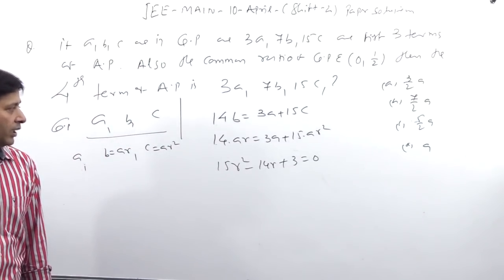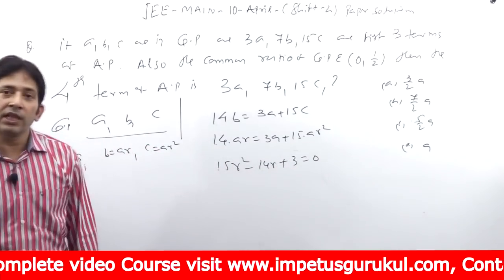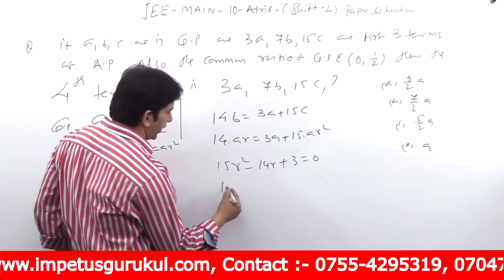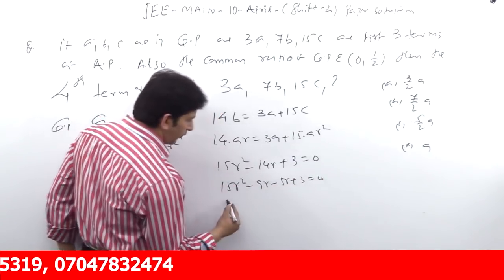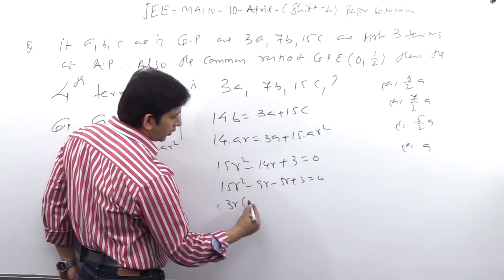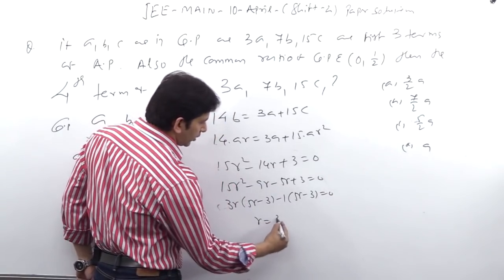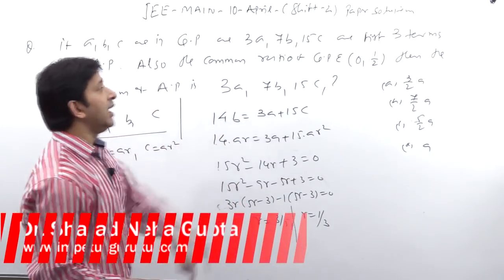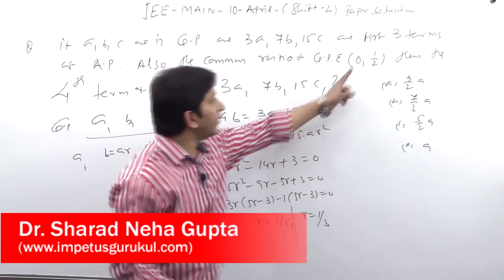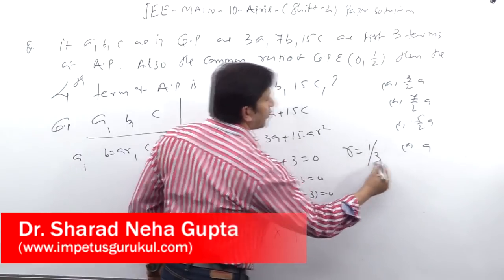Now factoring 15R² - 14R + 3 = 0: we get 15R² - 9R - 5R + 3 = 0, so 3R(5R - 3) - 1(5R - 3) = 0, giving R = 3/5 or R = 1/3. Since R must lie in (0, 1/2), R = 3/5 is not valid, so R = 1/3.